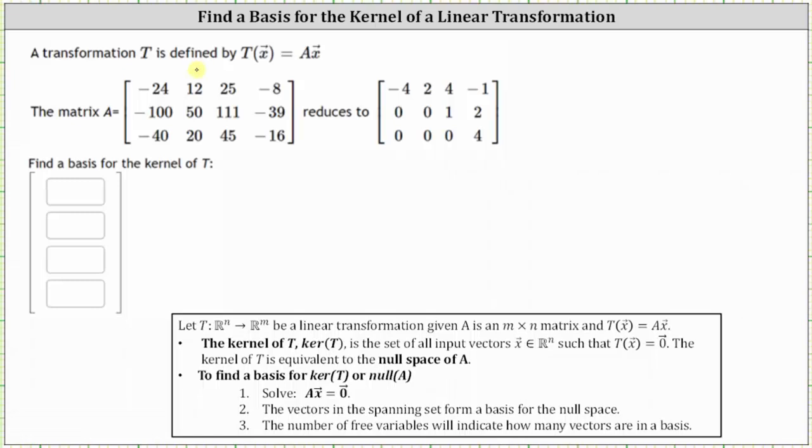First notice matrix A is a three by four matrix, which means a transformation T maps from R4 to R3.